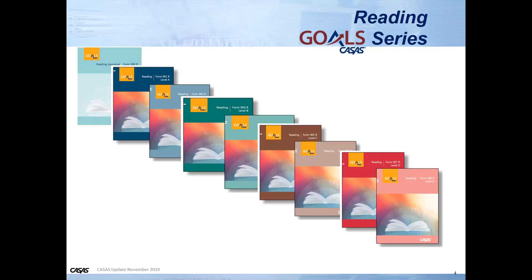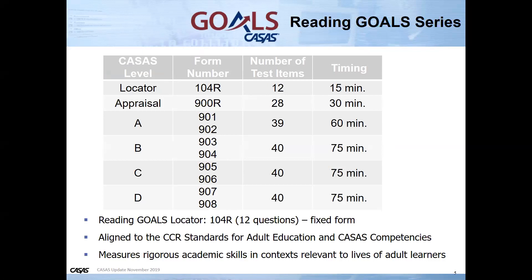The Reading Goals series was launched this summer. With the Reading Goals series, most of you have seen that the locator, the appraisal forms, as well as forms A, B, C, and D are visible in your eTest application.